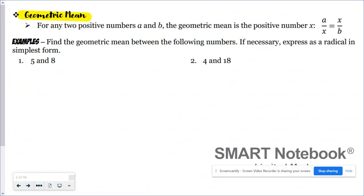The geometric mean: for any two positive numbers a and b, the geometric mean is the positive number x such that the ratio a over x equals the ratio x over b.